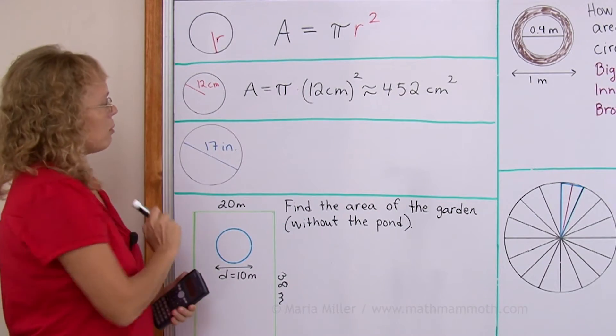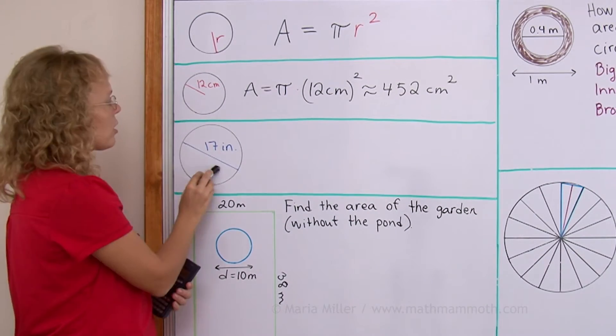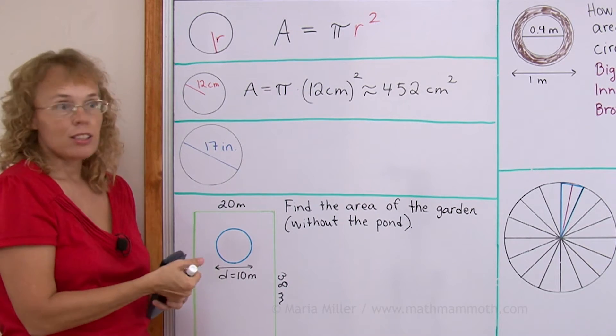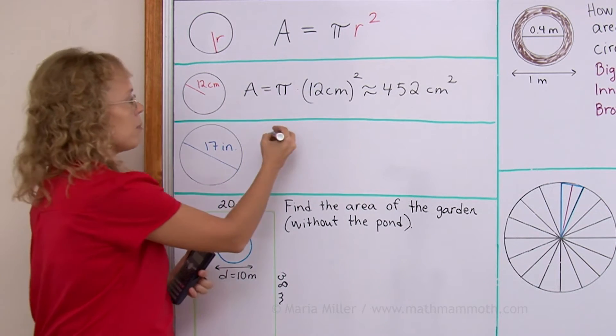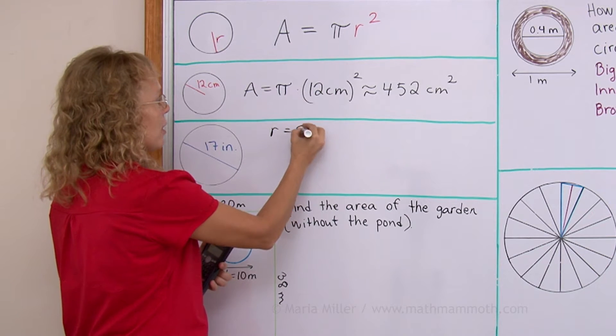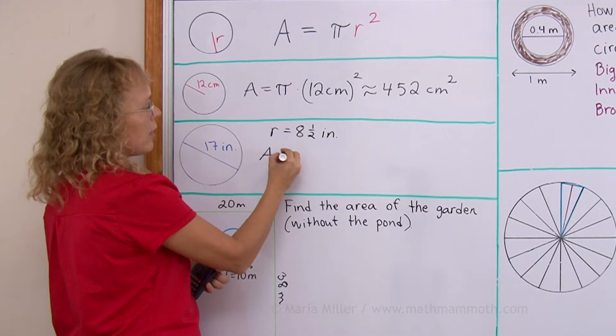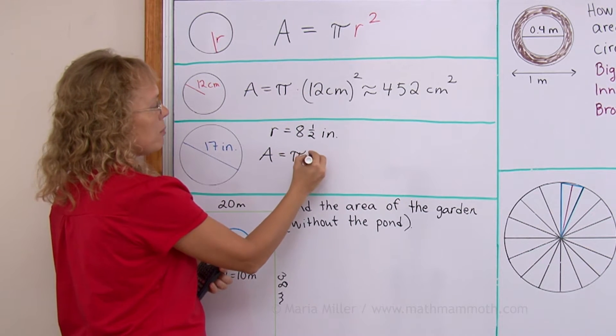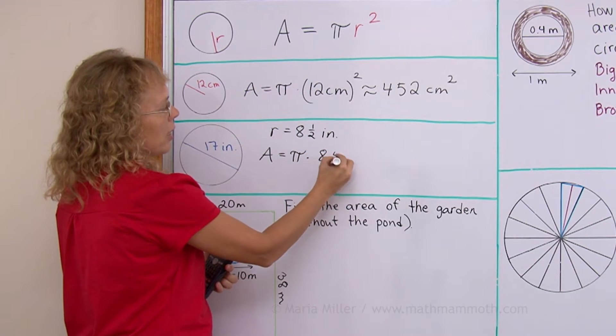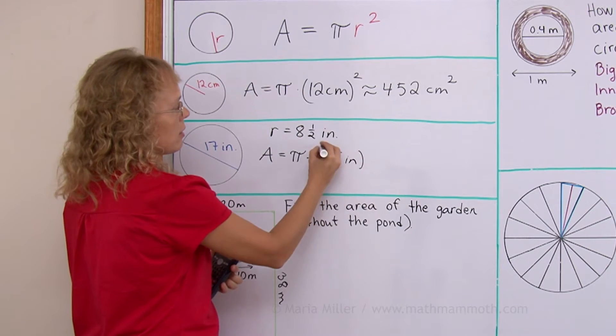Here we don't know the radius. The radius is not given. But we can calculate the radius, right? It is just half of the diameter. The radius would be 8.5 inches. And now we can calculate the area. It would be pi times 8.5 inches squared.